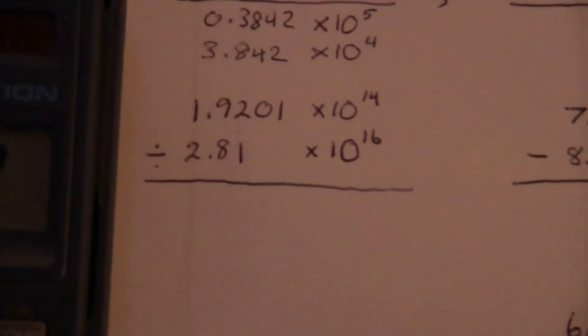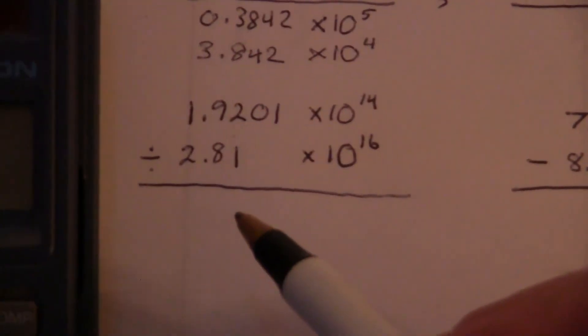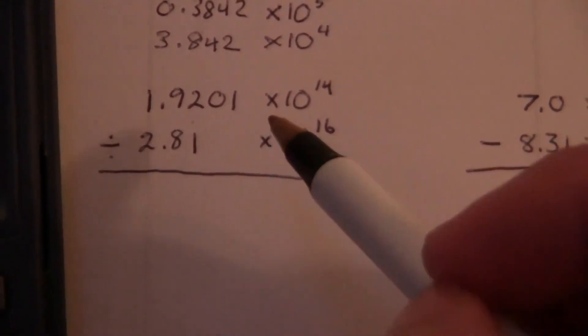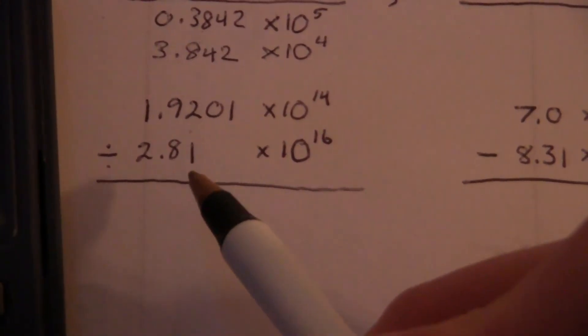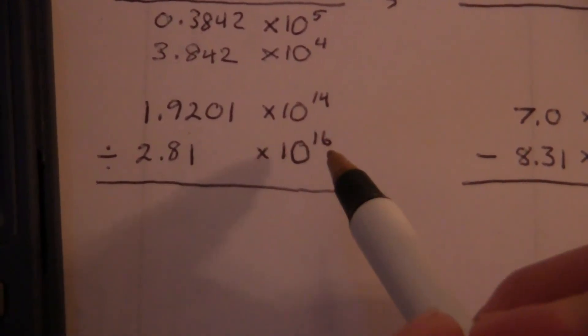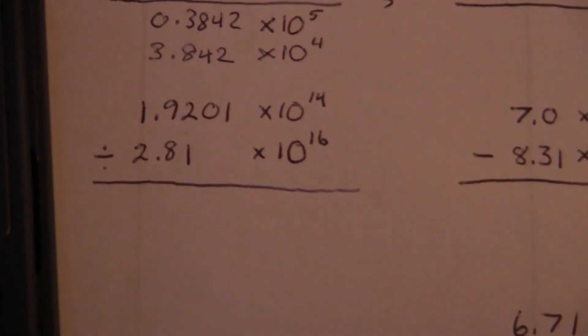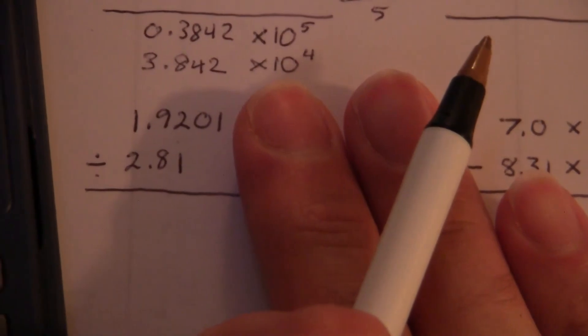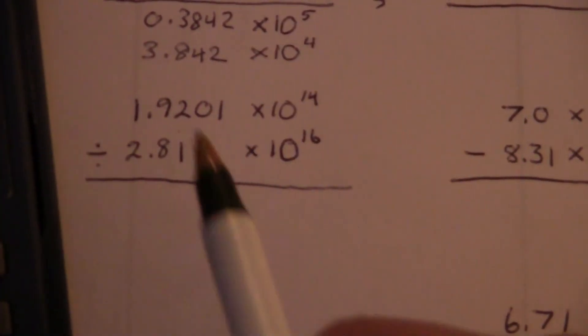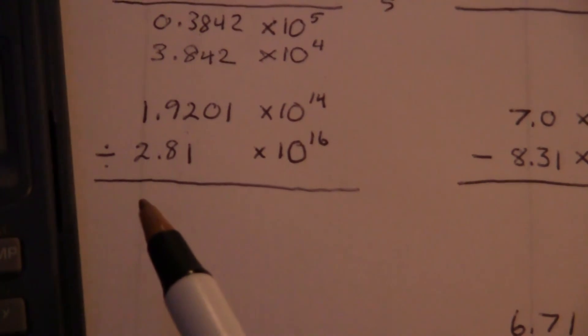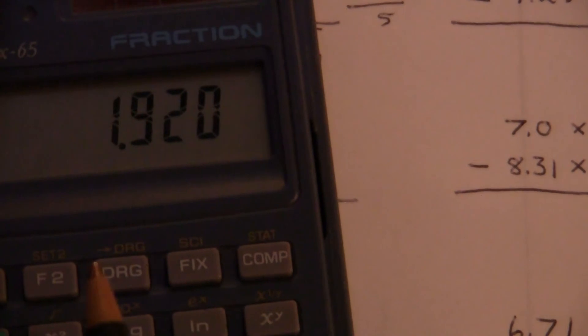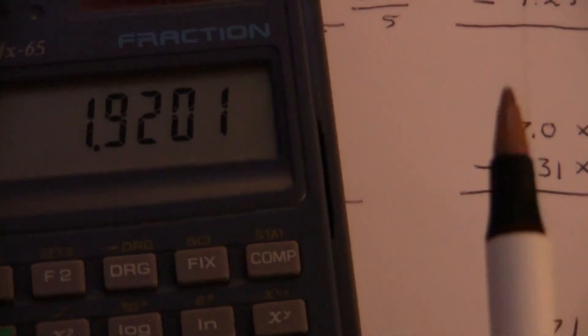So let's look at this other example for division. 1.9201 times 10 to the 14th, divided by 2.81 times 10 to the 16th. Bigger numbers, but we're going to treat it exactly the same. Separate it in two parts. First, we'll look at just the numbers. We'll divide those. 1.9201 divided by 2.81.